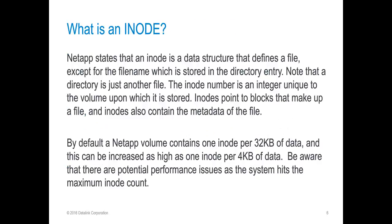So what is an inode? NetApp states an inode is a data structure that defines a file, except for the file name, which is stored in a directory entry. Note that a directory is just another file. The inode number is an integer unique to the volume upon which it is stored. Inodes point to blocks that make up a file, and inodes also contain the metadata of the file. By default, a NetApp volume contains one inode per 32 KB of data, and this can be increased as high as one inode per 4 KB of data.